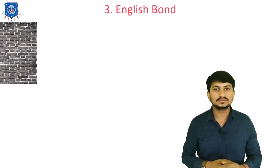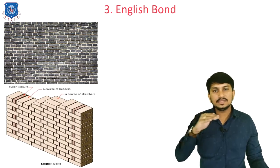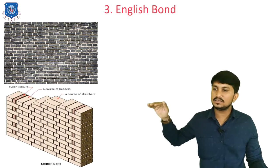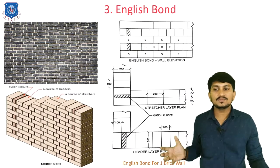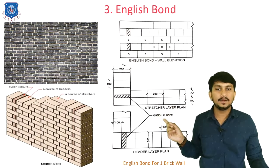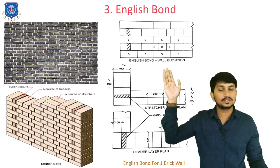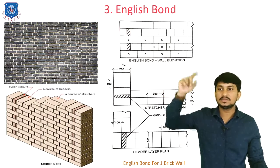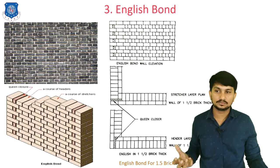The third is English bond. In English bond, one layer is of stretchers, the second layer is of headers, the third layer is of stretchers — it is alternate layers of stretchers and headers. This is the English bond for one brick work. Two queen closers are provided to disturb the vertical joints in one line. In the elevation of English bond, all stretchers appear in one layer and all headers appear in the next layer. This is the English bond for one brick wall, and also for one-and-half brick wall.